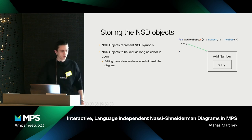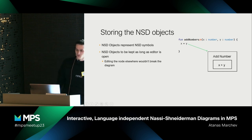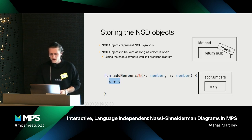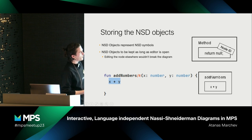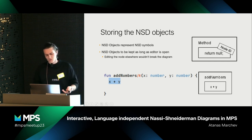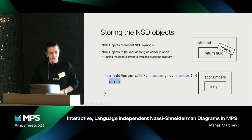Apart from that, I added — in the library, for every NSD object — the possibility to have the node ID represented as a string. When building the diagram from code, that way I could easily navigate from the diagram to code without much hassle, without searching through the entire node tree — just grabbing the node ID and pointing to it.